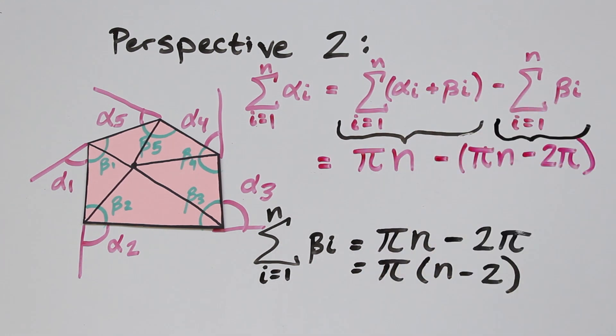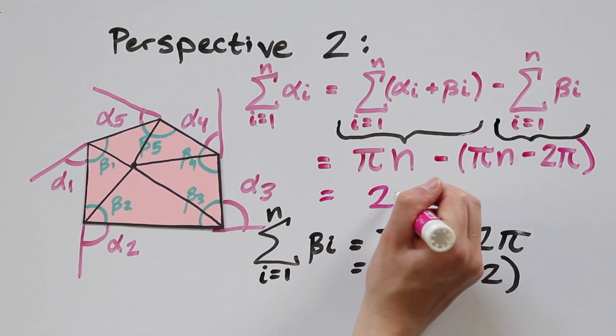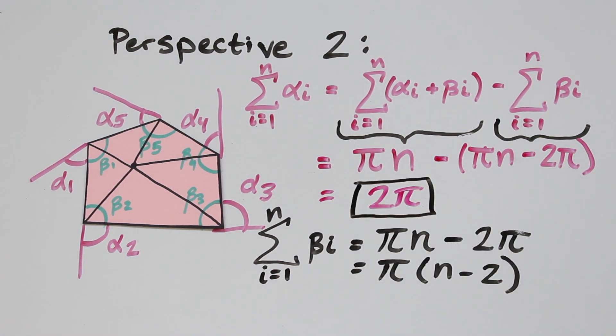Then we subtract the expression for the sum of the betas, and we see that the sum of the alphas is 2 pi, just like we wanted.